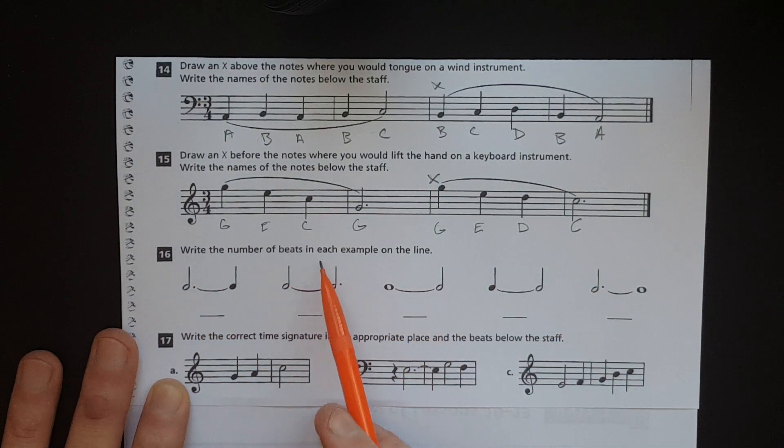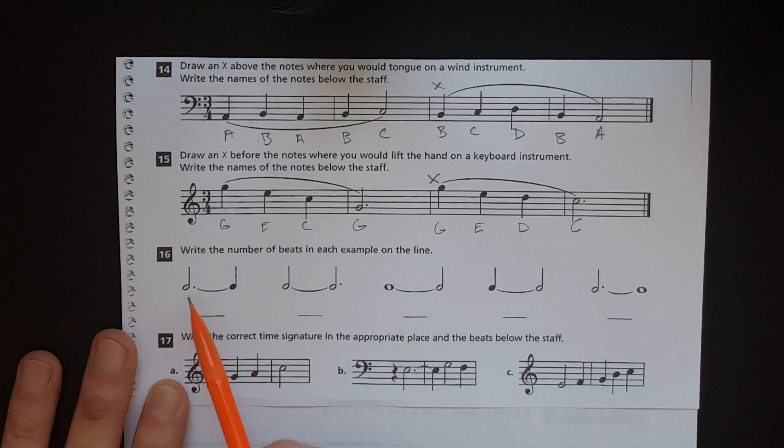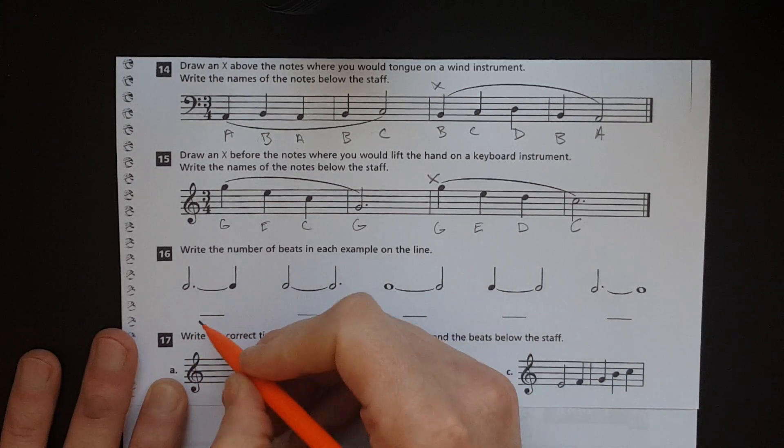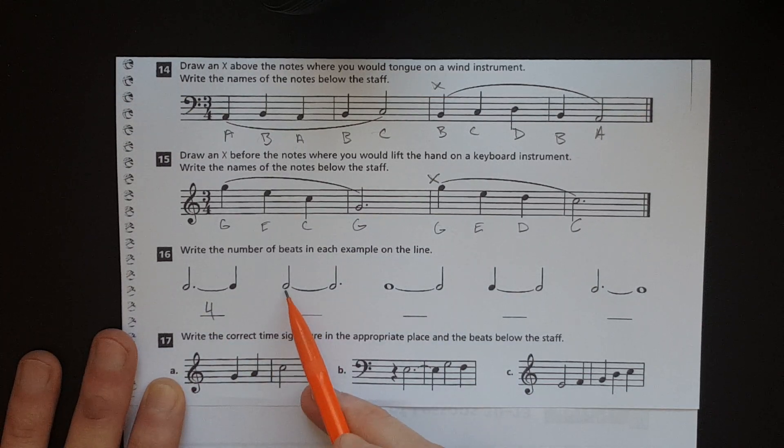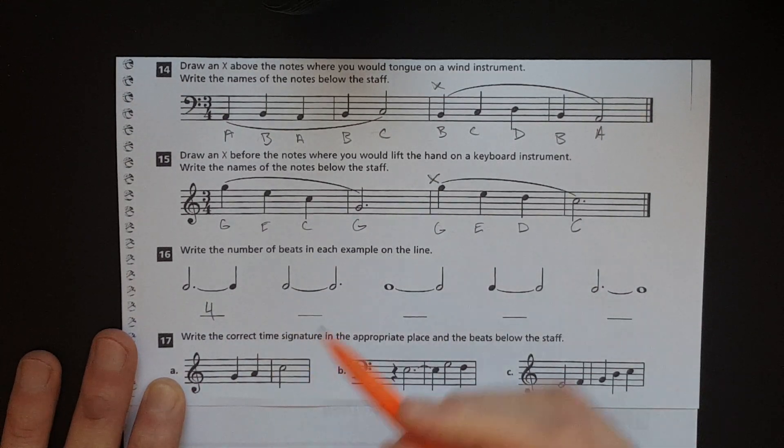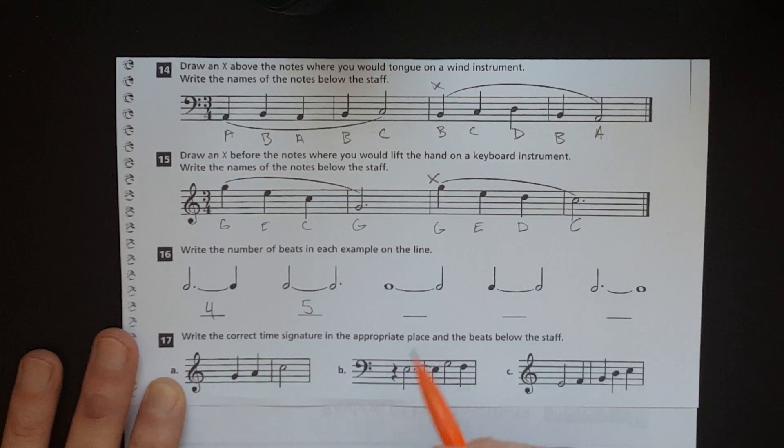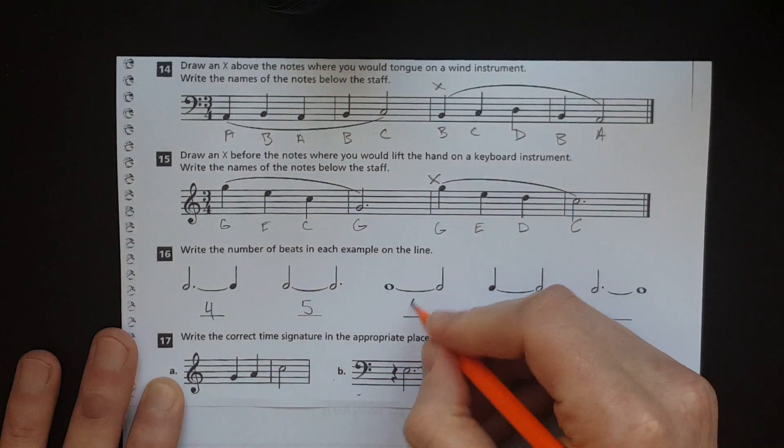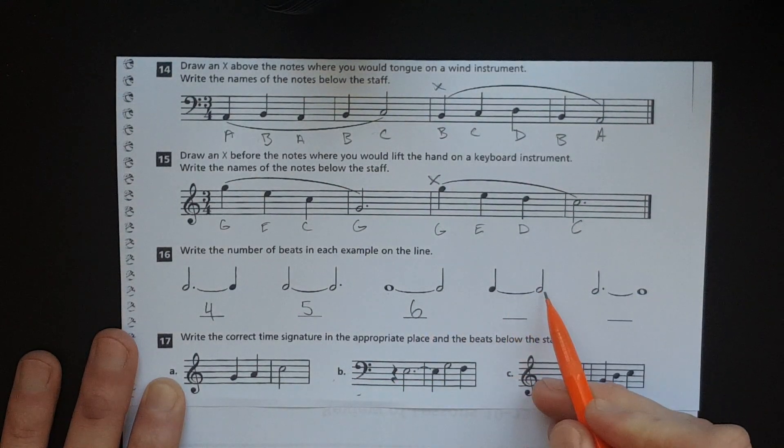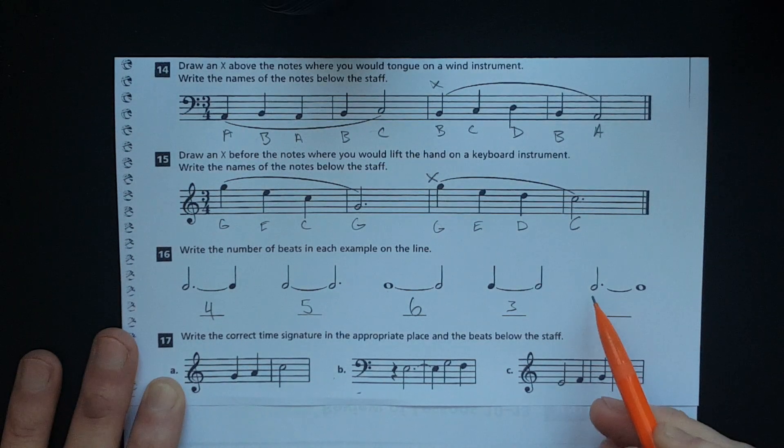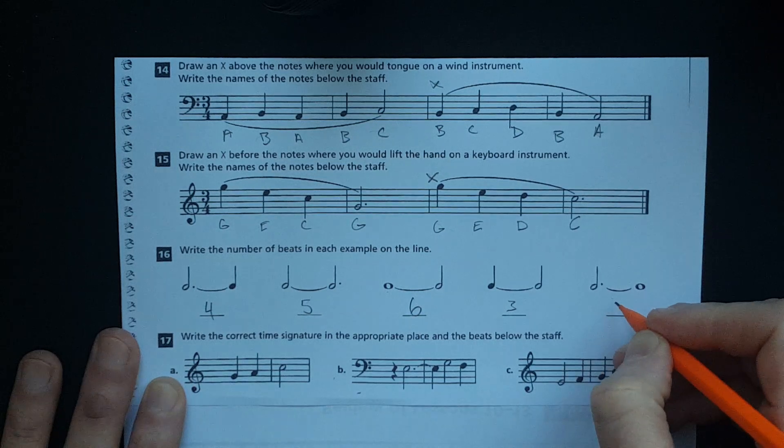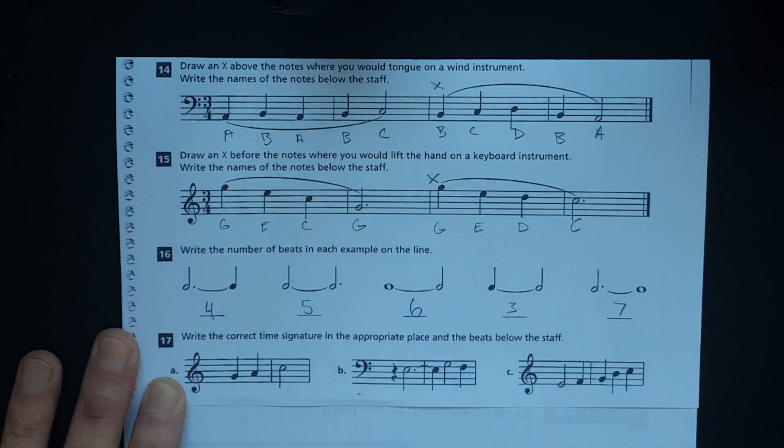Okay. Write the number of beats in each example on the line. So, these are tied notes. So, it's basically like every tie here is essentially a plus sign. You just add the note values together. A dotted half note plus a quarter note equals four total beats. A half note plus a dotted half note is five total beats. So, two plus three, basically. Here, you've got four for the whole note. Two for the half note, giving you six. One for the quarter note. Two for the half note, giving you three. Here, you've got a dotted half note plus a whole note, giving you a total of seven.